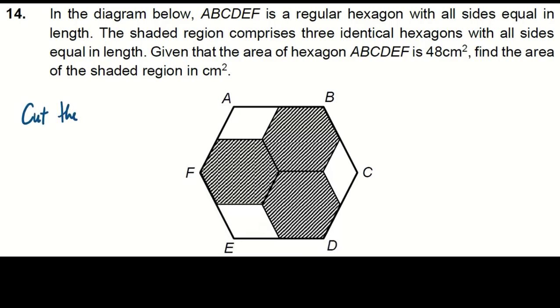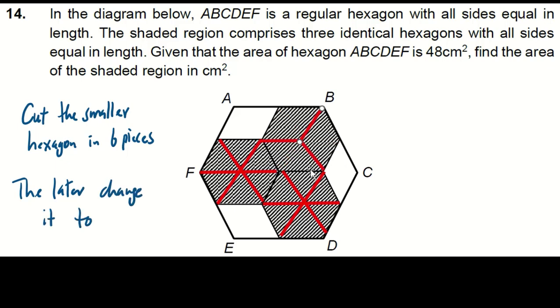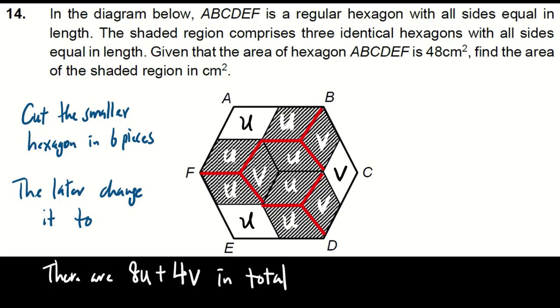First, cut each of the smaller hexagon into 6 equal pieces as shown. Then, make a slight change as shown. We see that there are two types of regions. Let's label the area of these regions as U and V as shown. Therefore, the total area is 8U plus 6V, which equals 48. This means that 2U plus V equals 12.